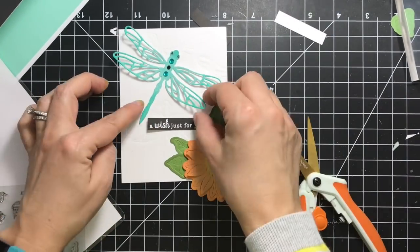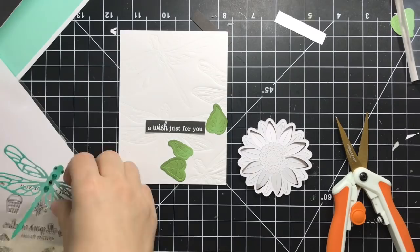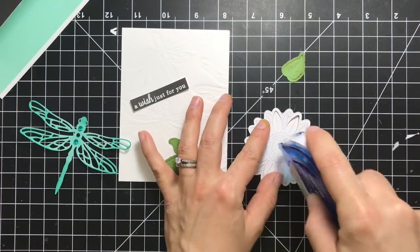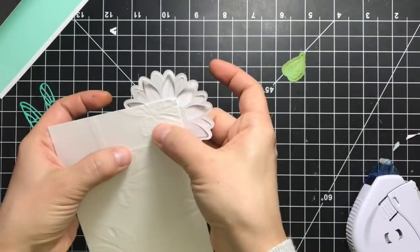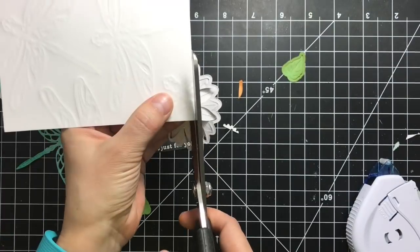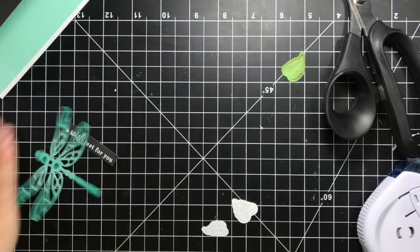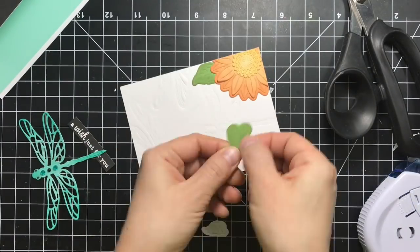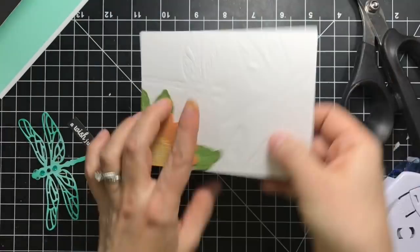Next we can put that panel together and arrange all the elements. I'm starting with the flower. I'll adhere it in the corner and then just using my scissors I'll trim out the ends. I'll adhere my leaves and again trim off the excess.